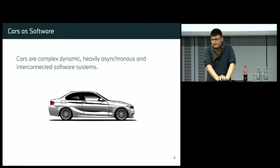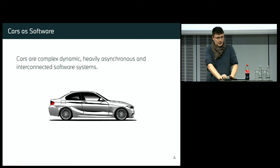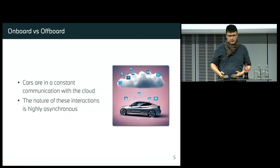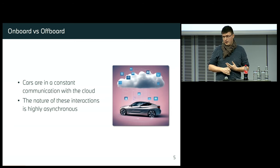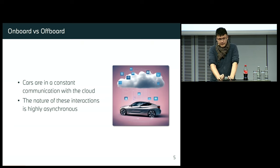What you see here is not a real BMW — this is an AI-generated image. But the question is: what is inside? Of course, a lot of hardware — wheels, steering wheel, chairs, computers, and so on. But it also contains a lot of software.